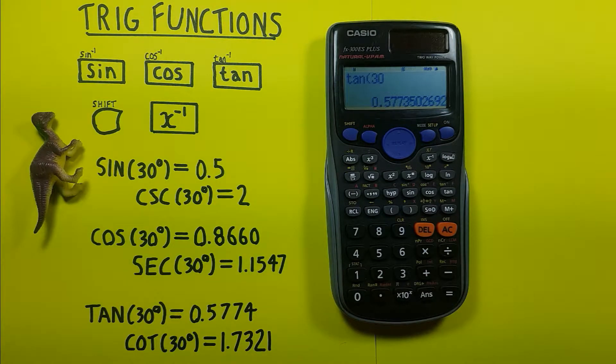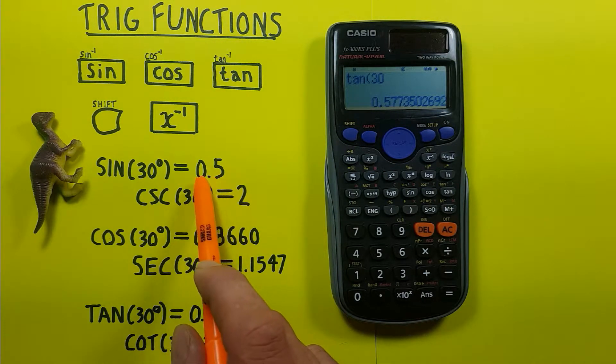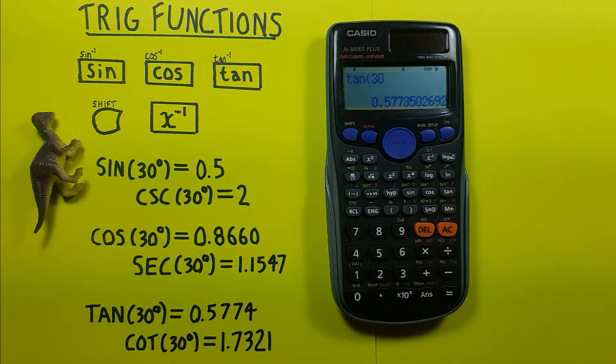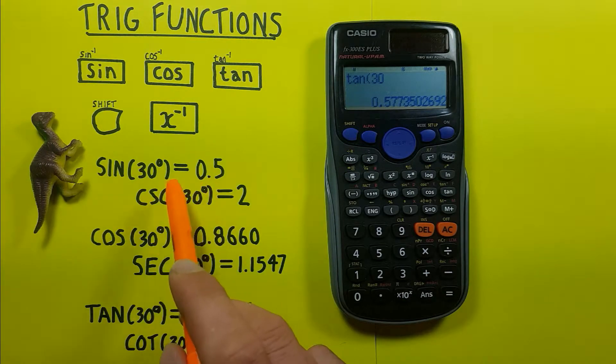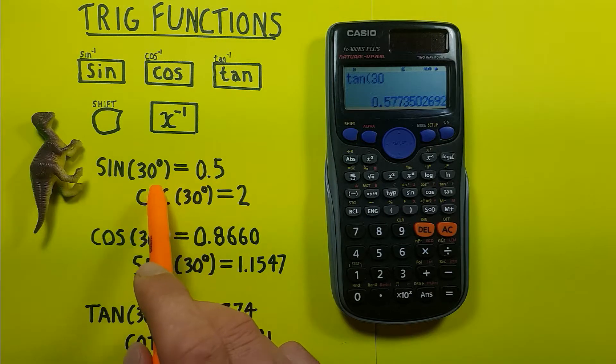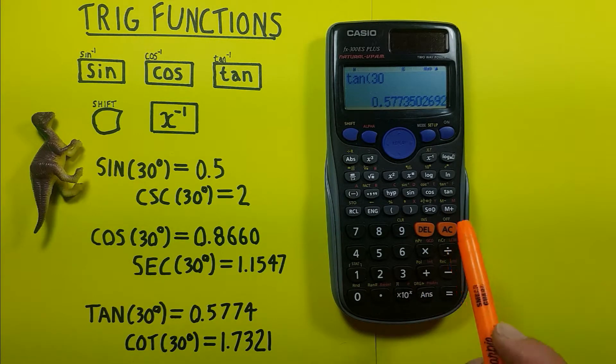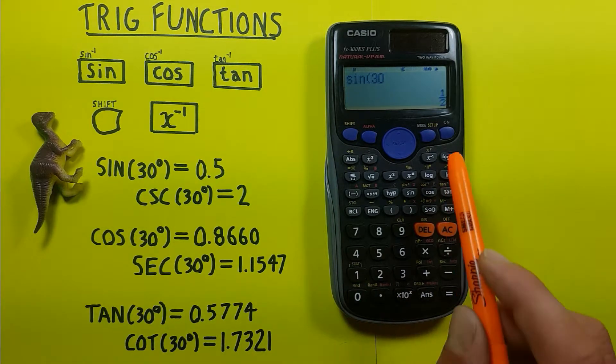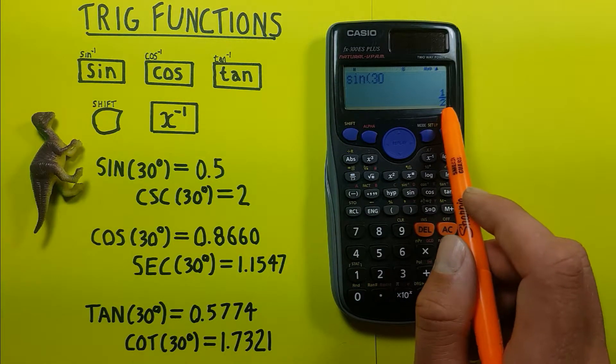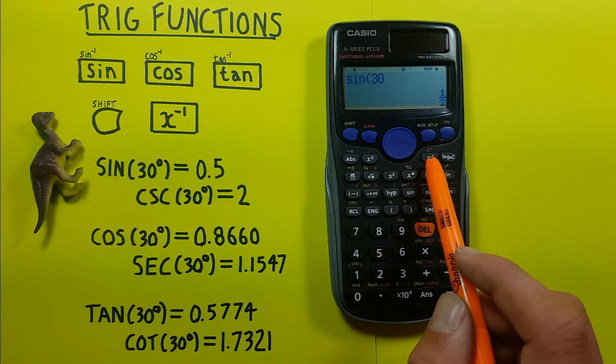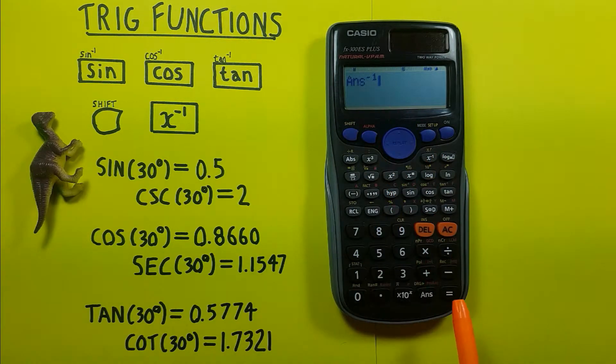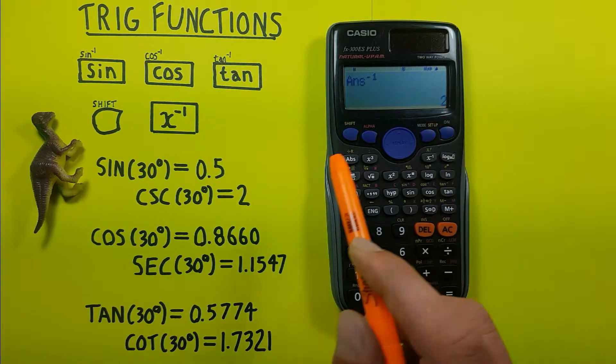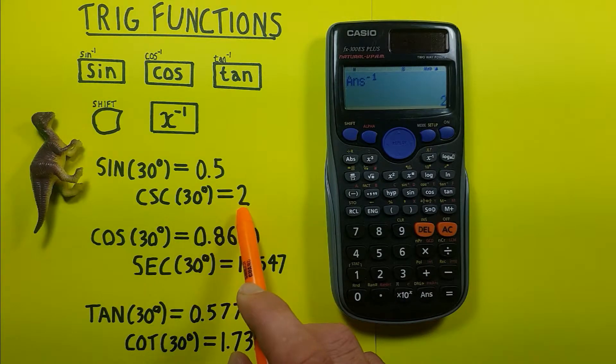We can also calculate cosecant, secant, and cotangent on this calculator by finding the inverse of the corresponding value. So for example, for the cosecant of 30 degrees, what we need to do is first find sine of 30, which remember gave us half, and then inverse it with the inverse key here. This gives us cosecant of 30 degrees equals 2.